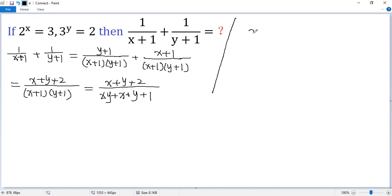We know 2 to the power of x equals 3. Now raise both sides to the power of y. The left side becomes 2 to the power of x times y. The right side, 3 to the power of y, which is 2 by the given condition. But we can write it as 2 to the power of 1. So compare, so we know x y equals 1. We denote that as star.